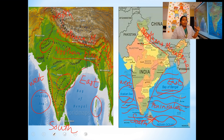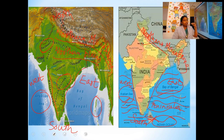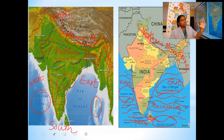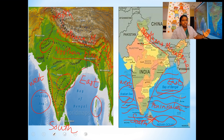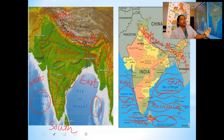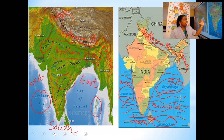A boundary is an imaginary line which separates a place from another place — an imaginary line which separates our country from neighboring countries. The southern part of India is called a peninsula because the three sides are surrounded by water. In the north, we have the northern mountains or Himalayas; in the south, the Indian Ocean; in the west, the Arabian Sea; and in the east, the Bay of Bengal.